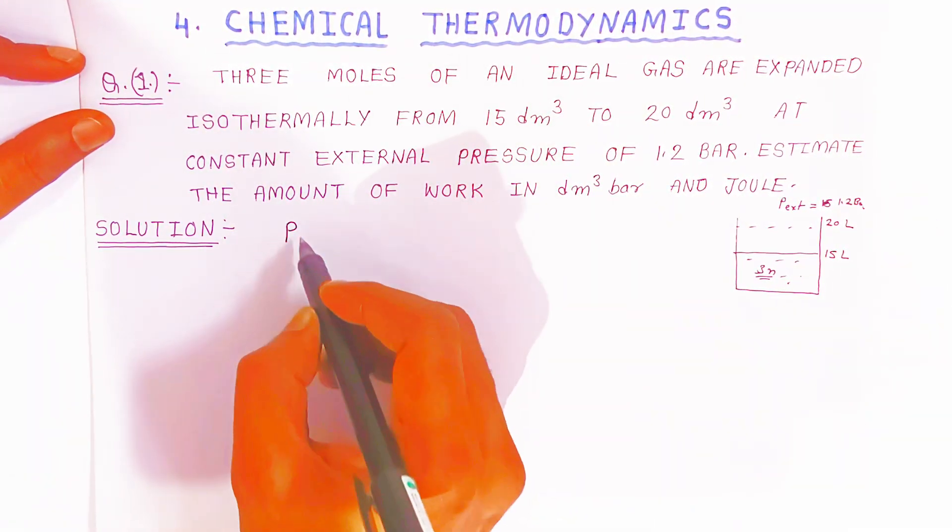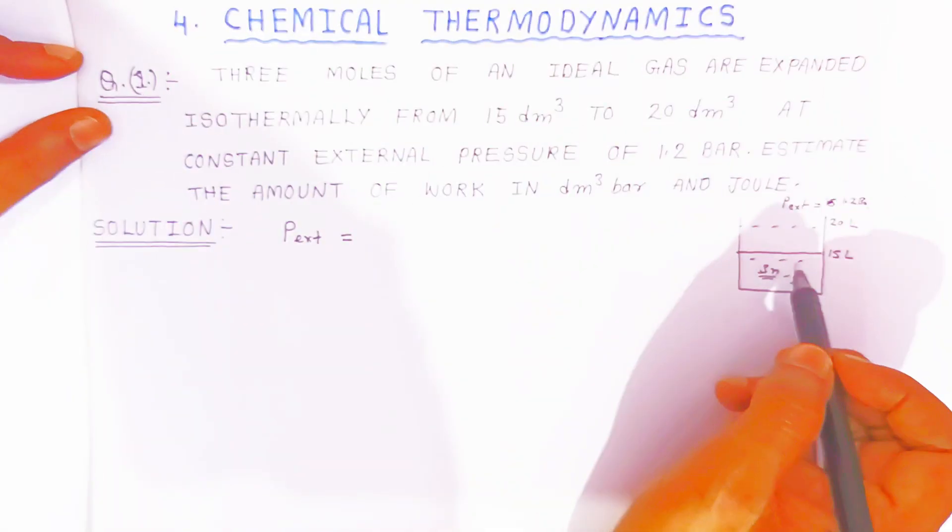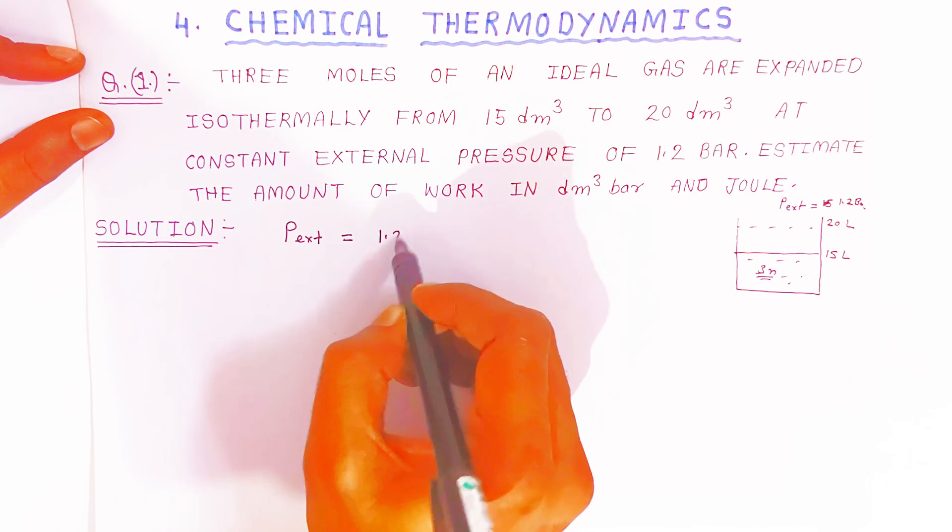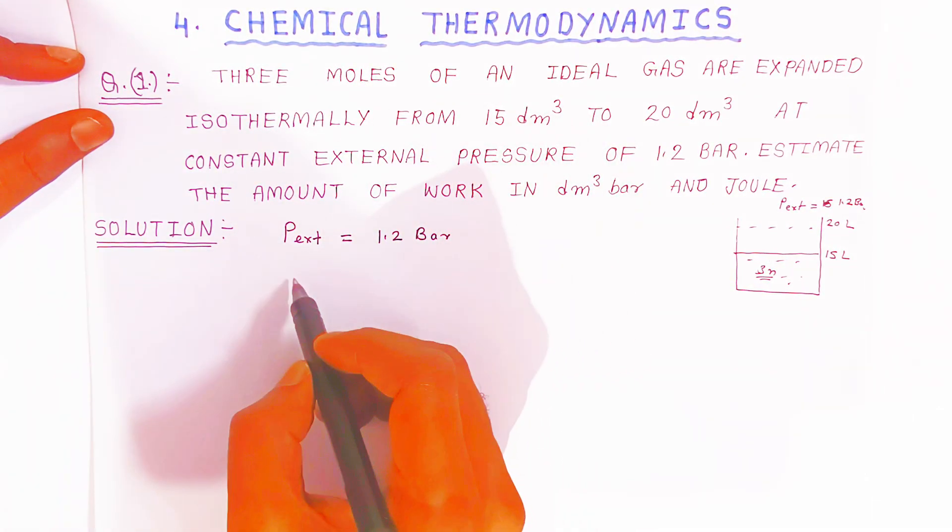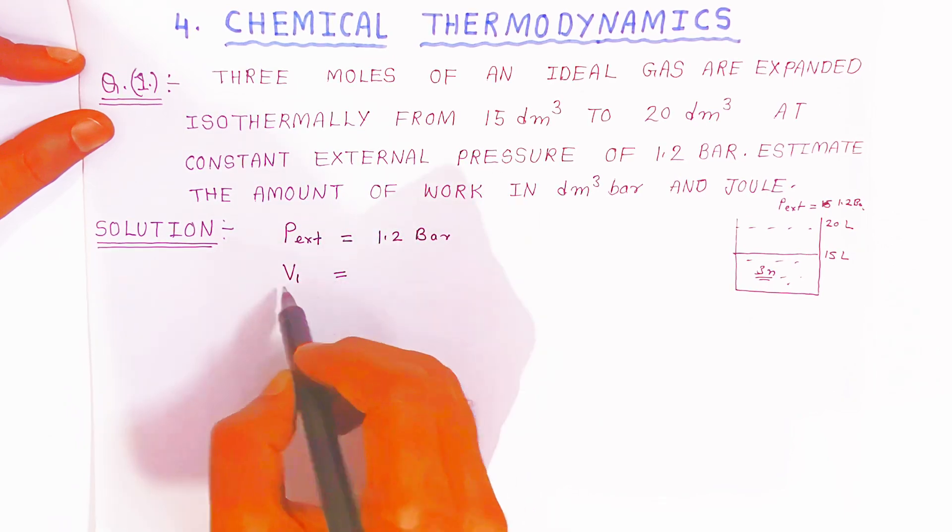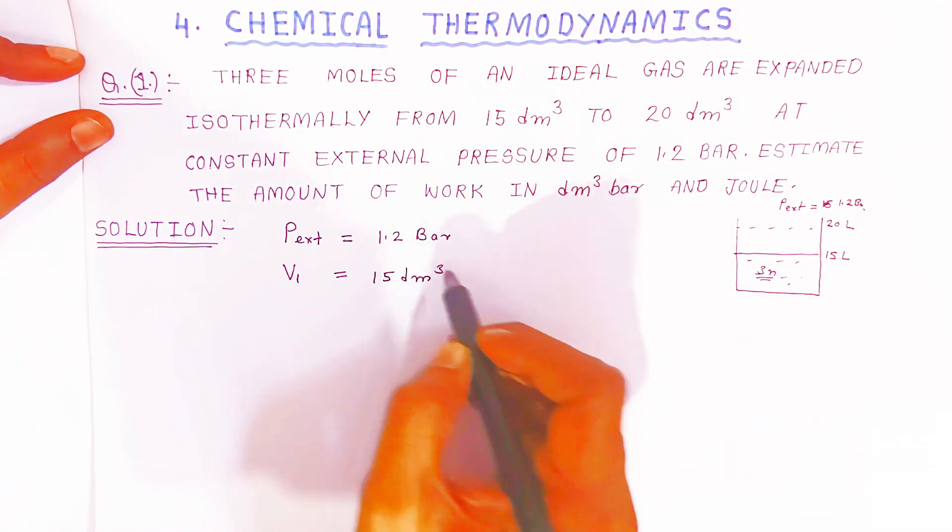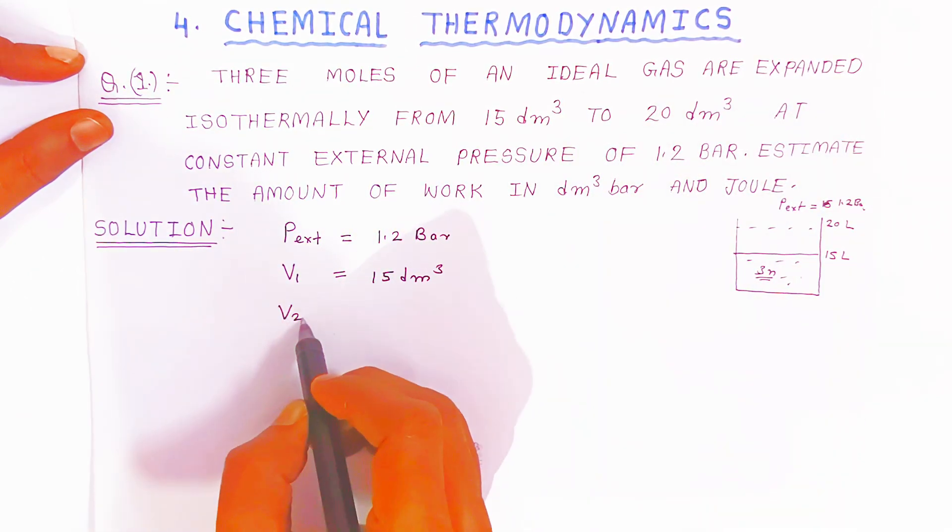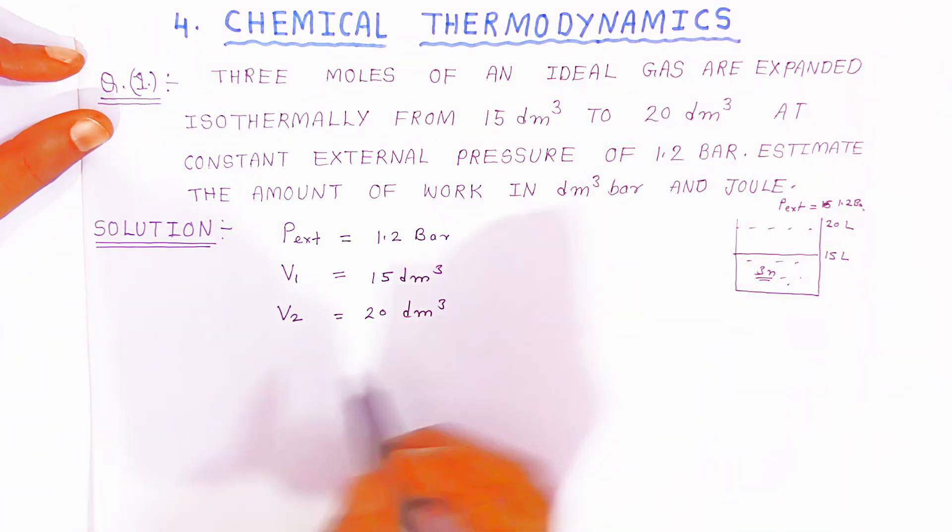To estimate that, so what is given students we will write first. Here students, p external, external pressure is given which is outside of this system students. It is given 1.2 bar. Now what else is given students, the volume, initial volume we have taken one V₁ that is 15 dm³ and final volume V₂ is given students 20 dm³.